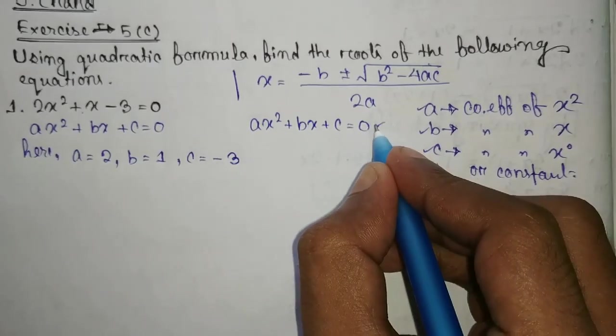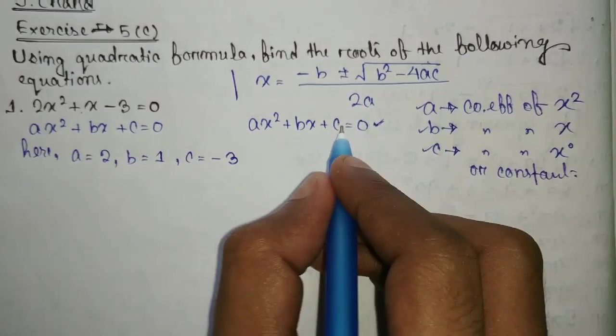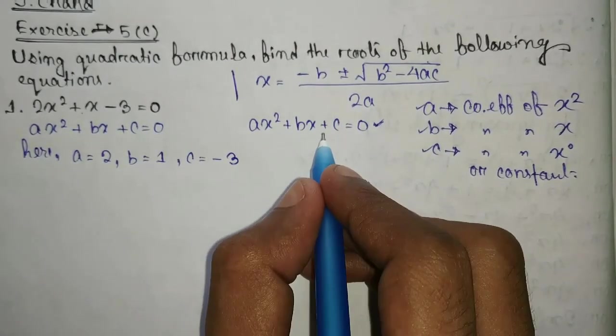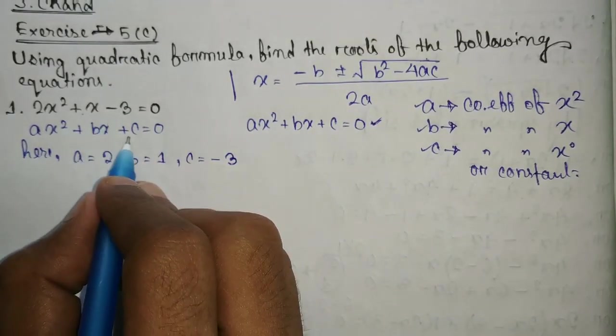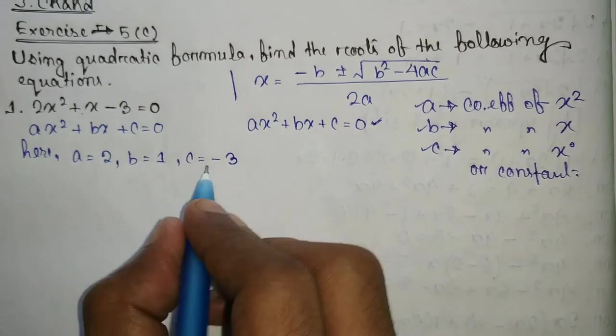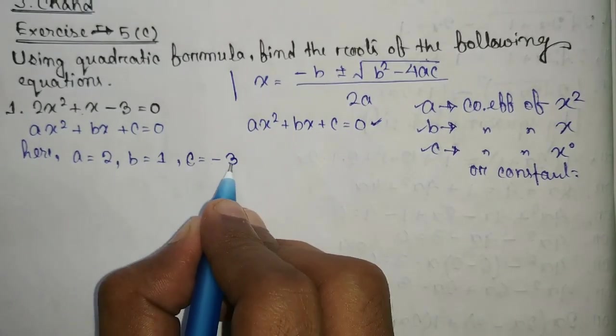Always remember that the ideal quadratic equation is always in positive. We consider it positively. So if there is a negative sign then we also consider it as a constant. So the value of c equal to minus 3.